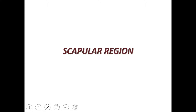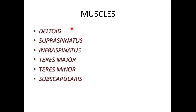The scapula region mainly includes the muscles attached to the scapula and the nerves and vessels related to it. The muscles are: deltoid, supraspinatus, infraspinatus, teres major, teres minor, and subscapularis. The strictly associated muscles are deltoid, supraspinatus, infraspinatus, and teres minor, with subscapularis and teres major as additional muscles. The deltoid has already been explained in a previous video; we will cover the remaining muscles today.